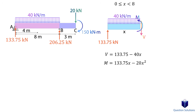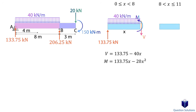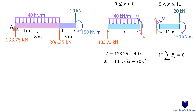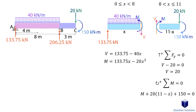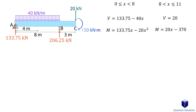Now we move on to the next segment, from greater than 8 meters to 11 meters. The length of this section is the total beam length minus x. We ignore the vertical reaction at B since that's the location of our cut. At the left end we have the shear force and moment; on the right side we have the 20 kN force along with the applied moment. Writing the equilibrium equation for y-axis forces gives the shear force. Then we write a moment equation with the 20 kN force times the perpendicular distance plus the end moment. We now have all the equations we need to plot our graphs.